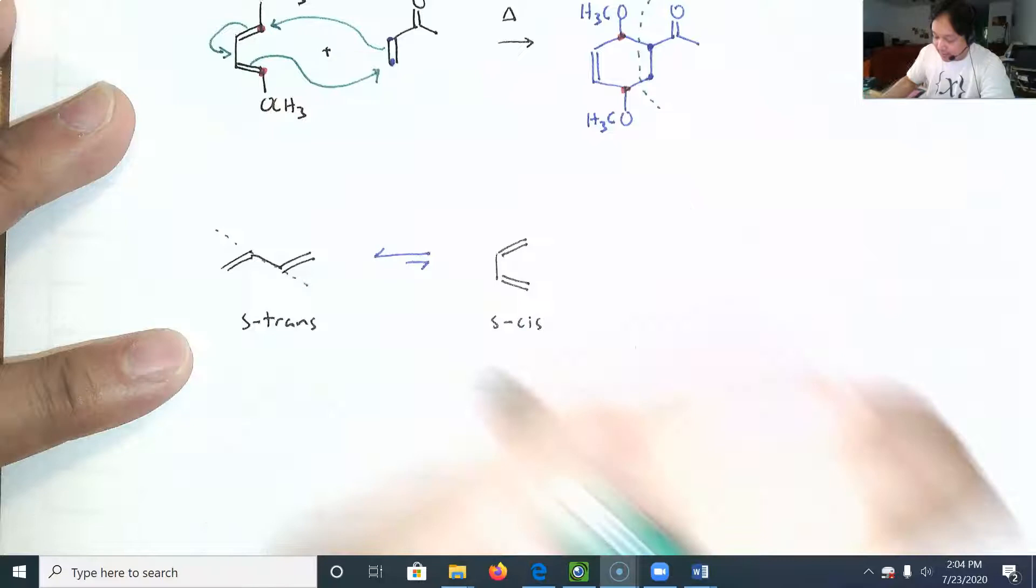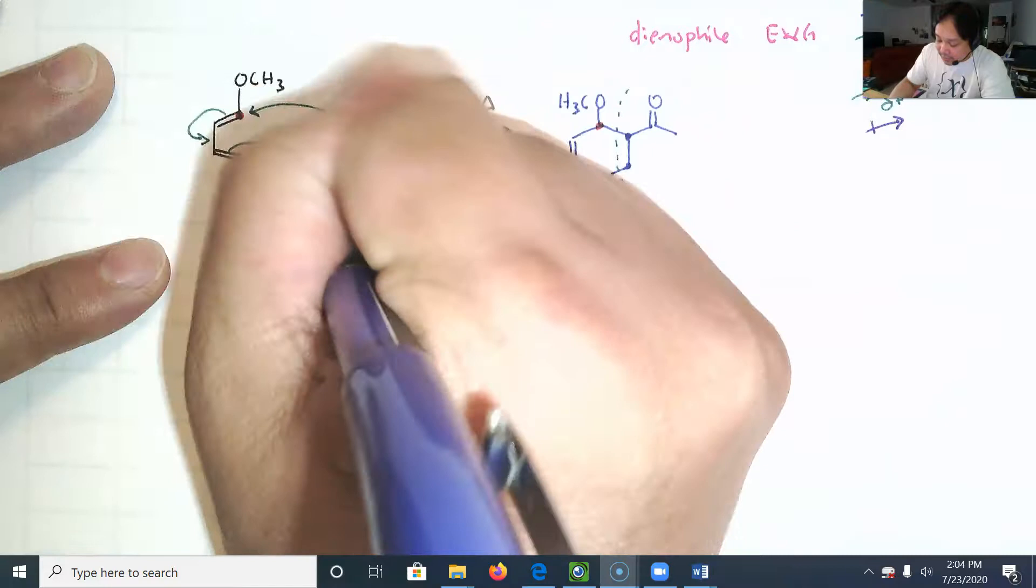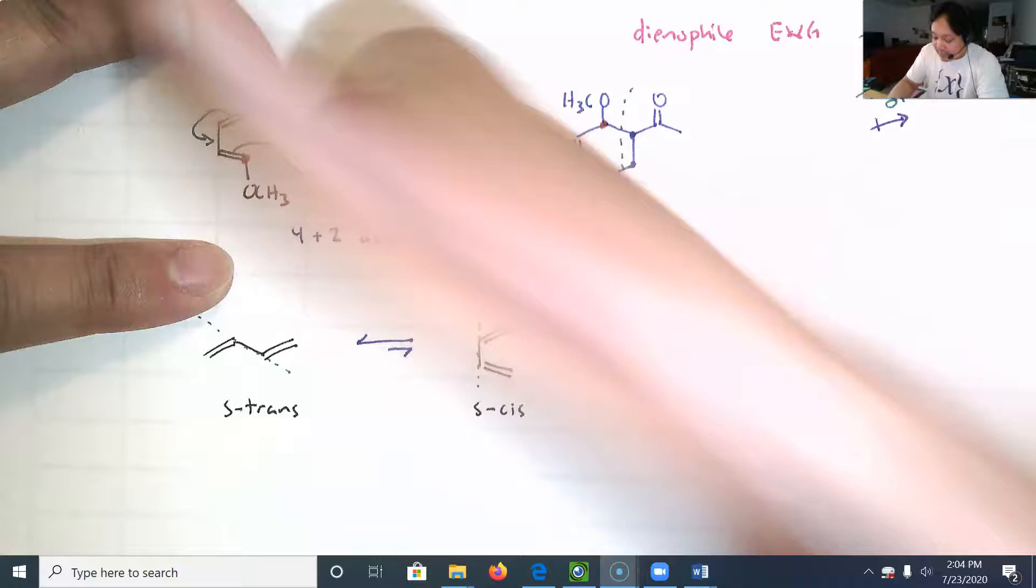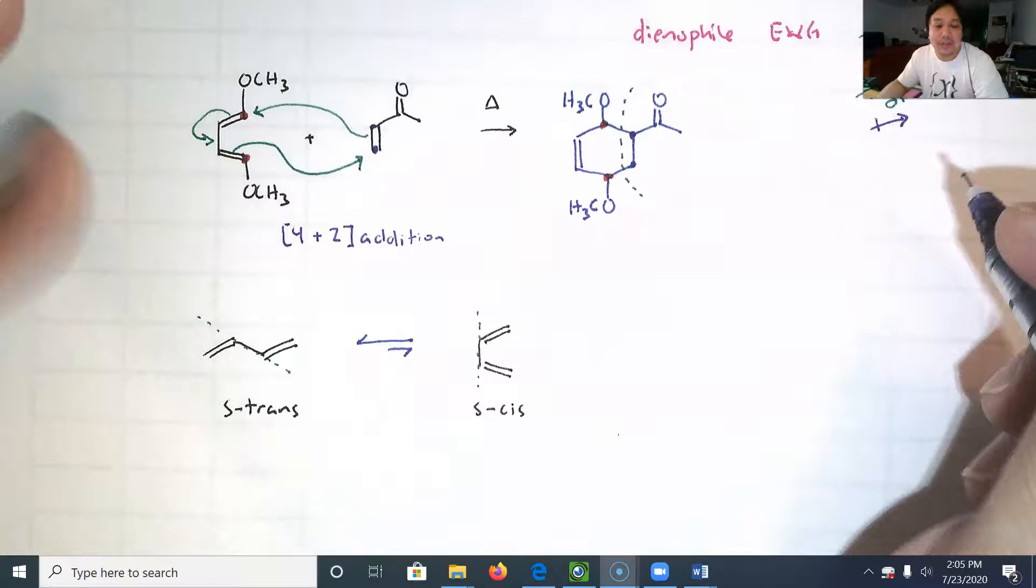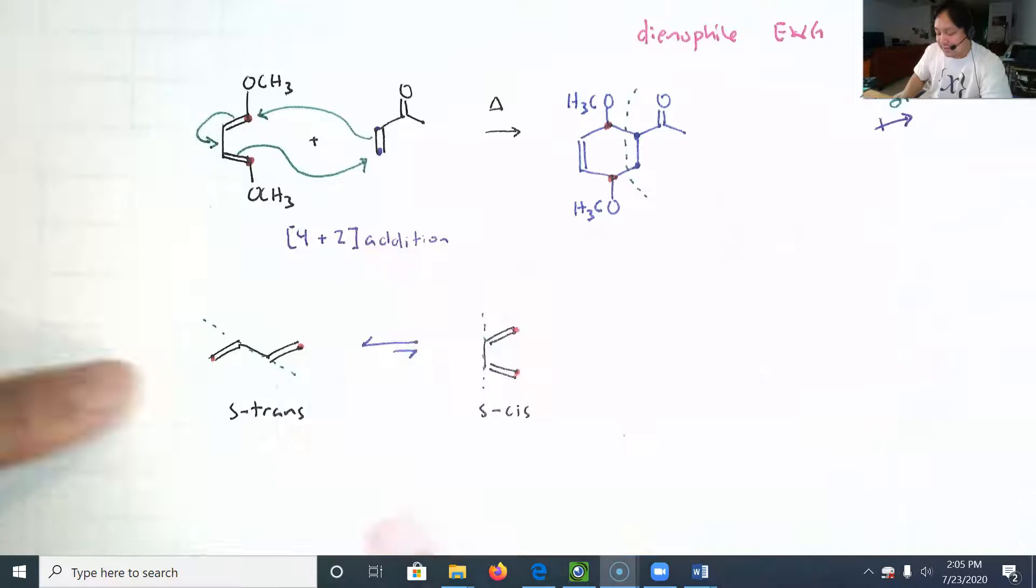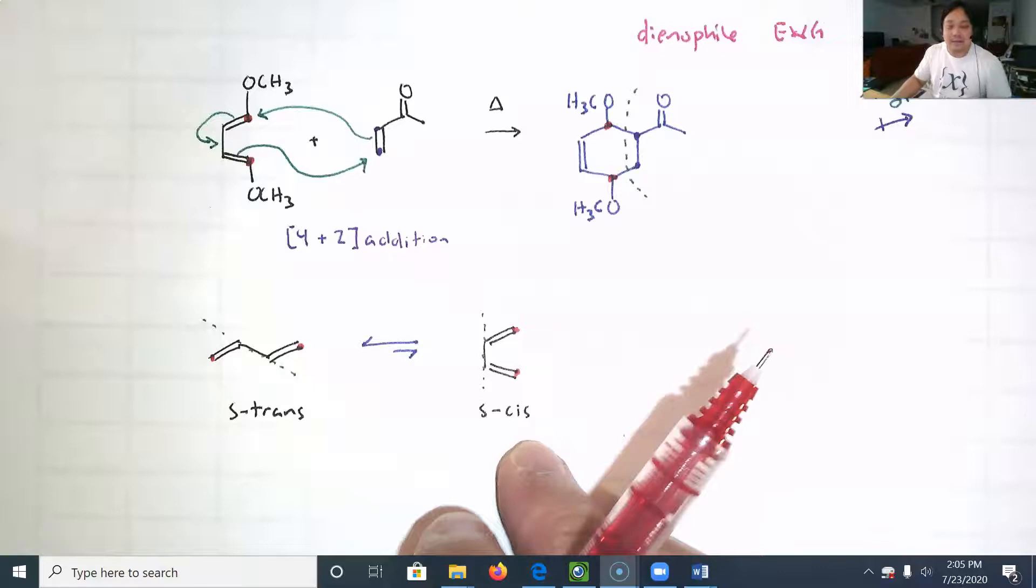When we do the cyclization, another way to call this is a 4 plus 2 addition—4 carbons add to 2. I know we have more than 4 carbons, but those other carbons don't participate in the reaction. In this 4 plus 2 addition, you've got to get those two red dots ready to make a ring. If they're in the S-trans conformation, there's no way you're going to make a six-membered ring without rotating around to get closer. S-cis is the conformation you need to do a Diels-Alder reaction.